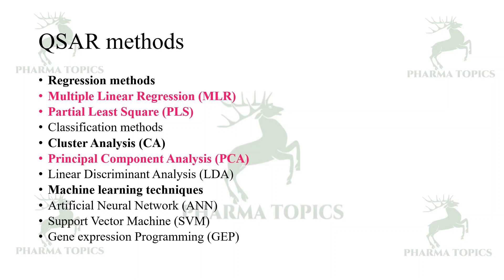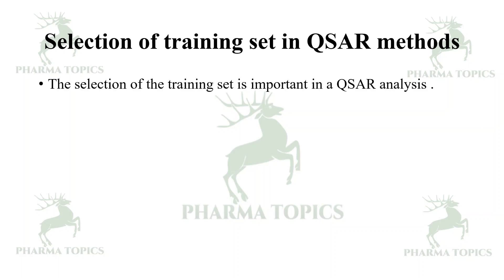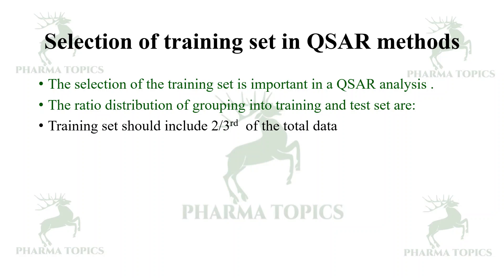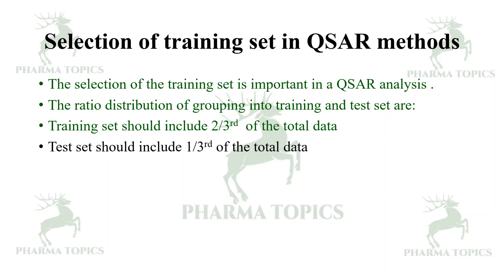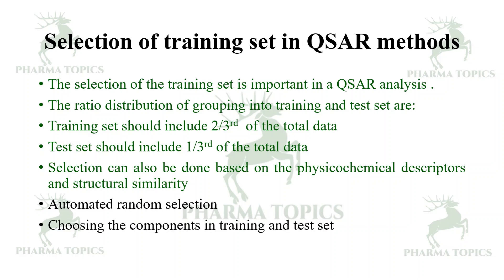Selection of the training set is very important in QSAR analysis. The training set should include two-thirds of the total data, and the test set should include one-third. Selection can be based on physicochemical descriptors, structural similarity, or automated random selection.